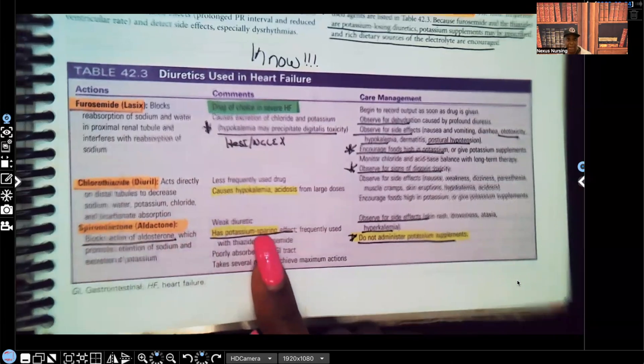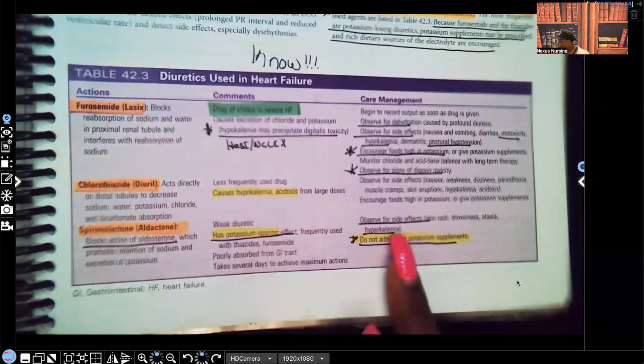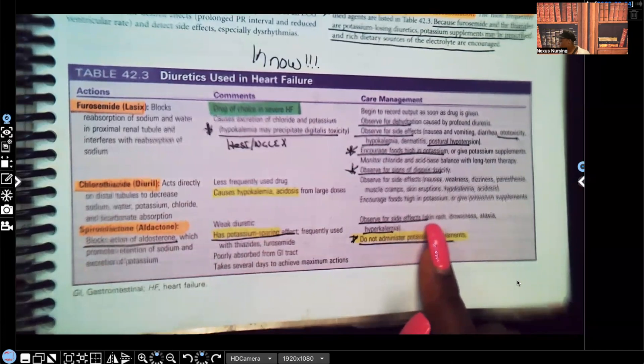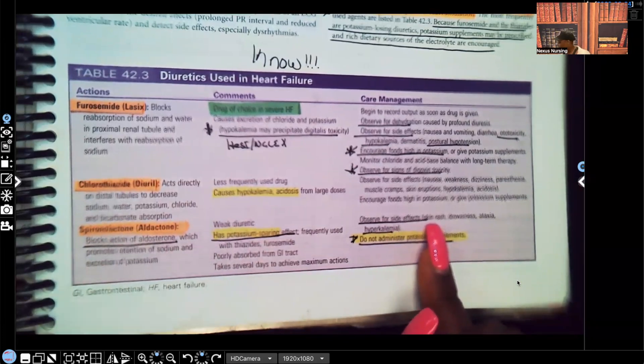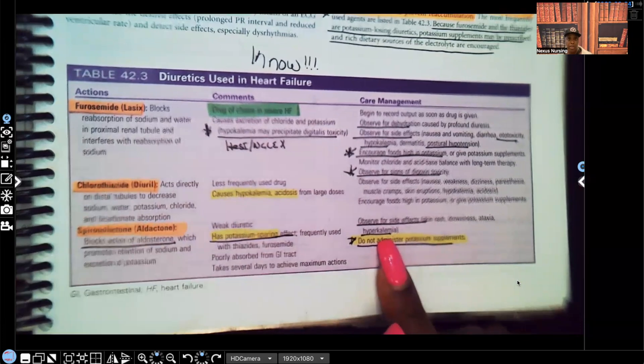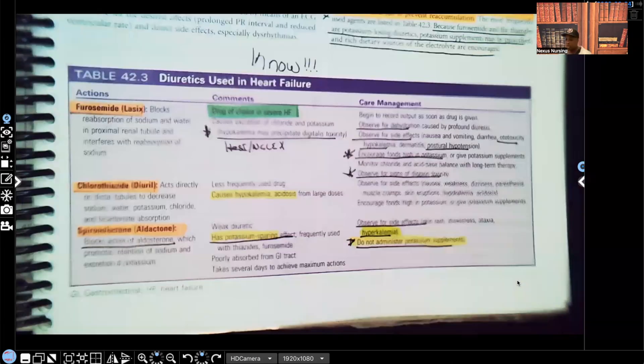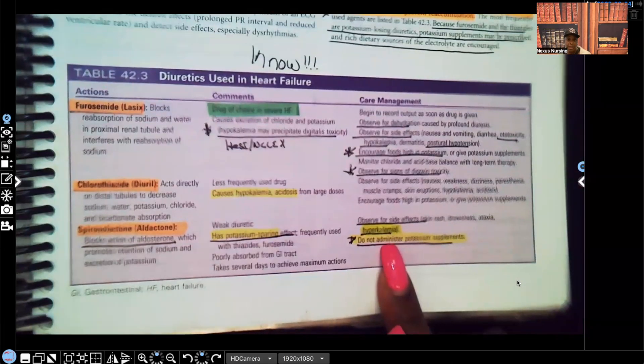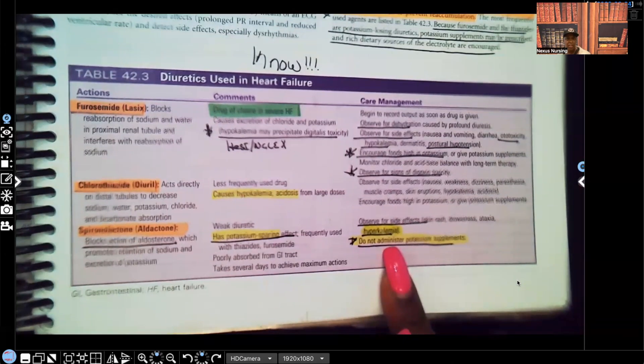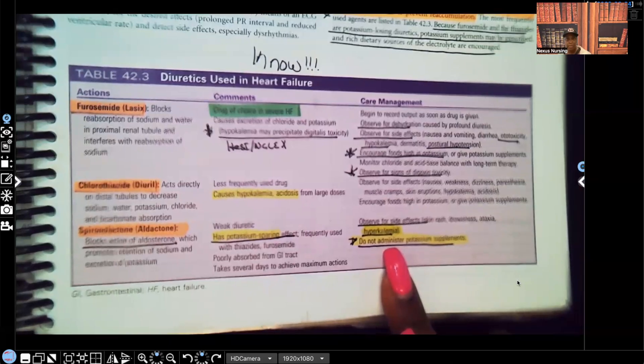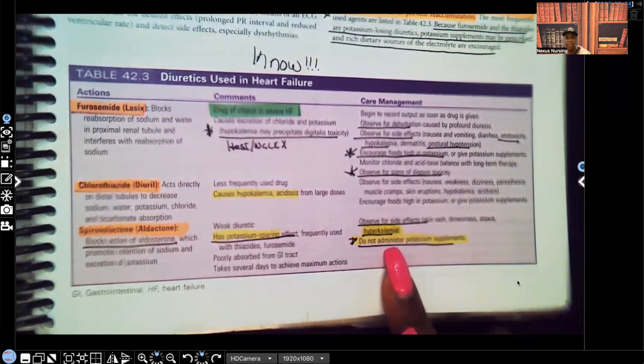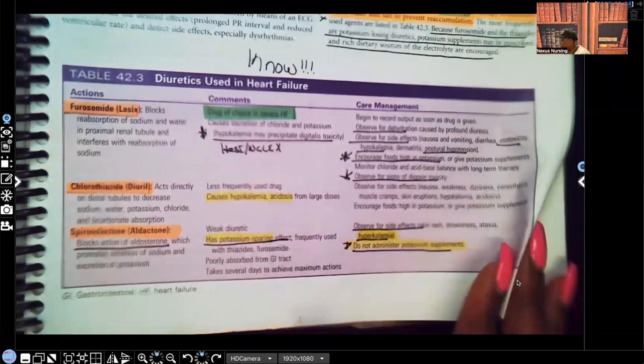Take a look - has potassium sparing effects. You're going to observe for side effects such as skin rash, drowsiness, ataxia - that's kind of when they're walking like they're drunk. Ataxia, hyperkalemia. I put a star, well I should have put a star next to hyperkalemia. I highlighted it, make sure you know that. And do not administer potassium supplements. Why would you do that? If this is a diuretic that already increases your potassium, why would you give potassium supplements to increase potassium even further? I told you anything out of that range of 3.5 to 5 can cause that patient to have cardiac dysrhythmias. So that's important to know.